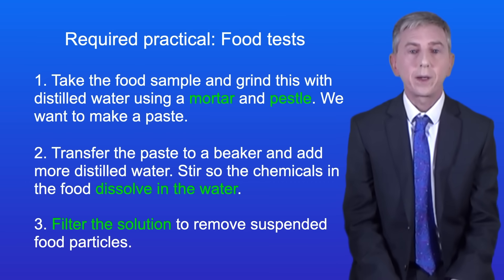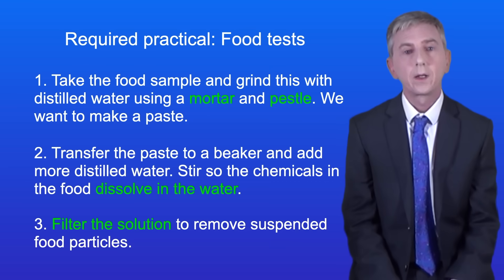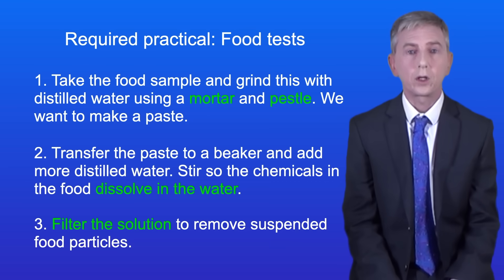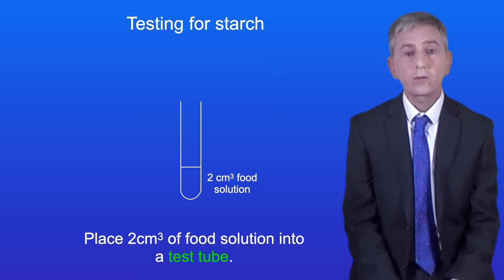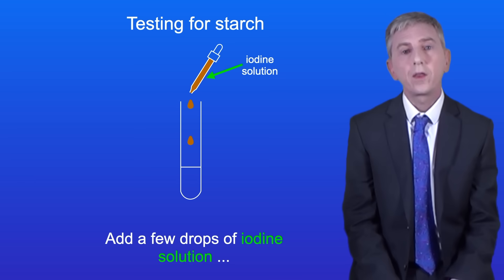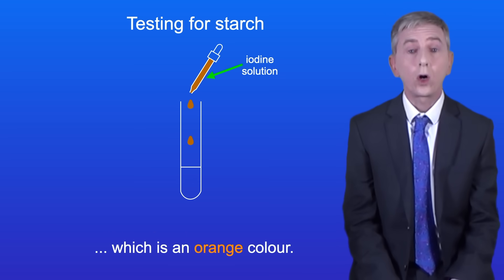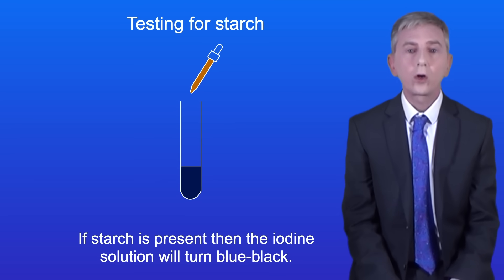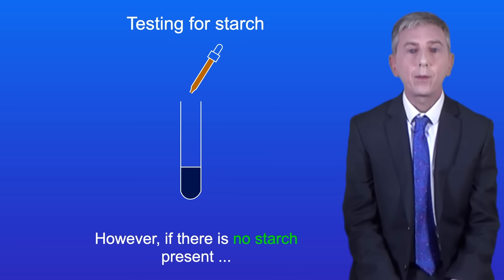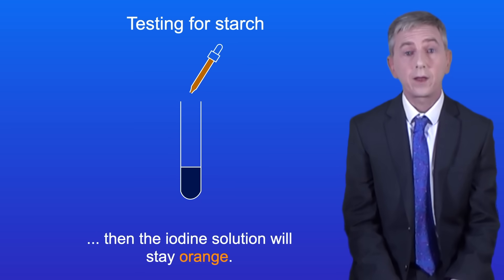We're going to start by testing for carbohydrates. Carbohydrates include starch and also sugars such as glucose. To test for starch, we place 2cm³ of our food solution into a test tube. We then add a few drops of iodine solution, which is an orange colour. If starch is present, then the iodine solution will turn blue-black. However, if there's no starch present, then the iodine solution will stay orange.